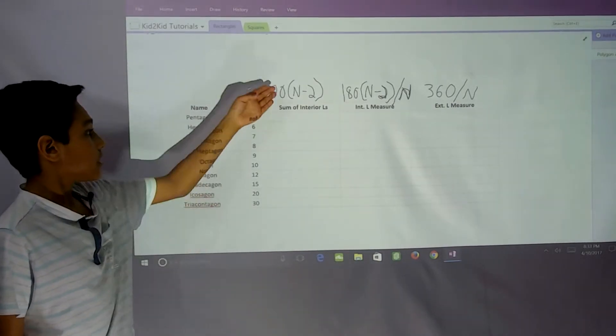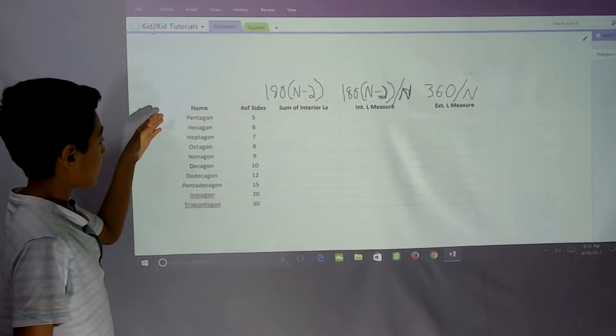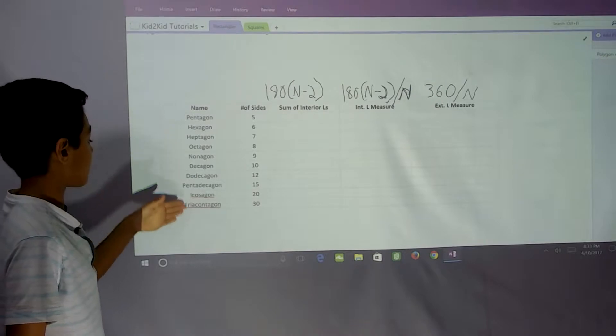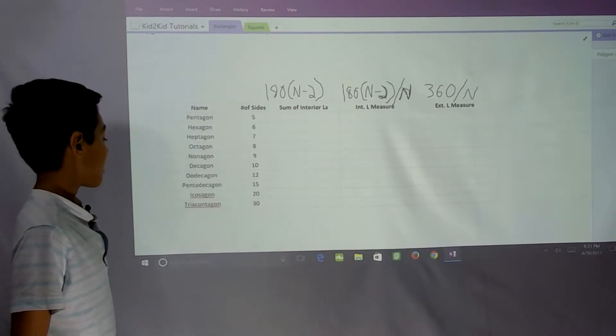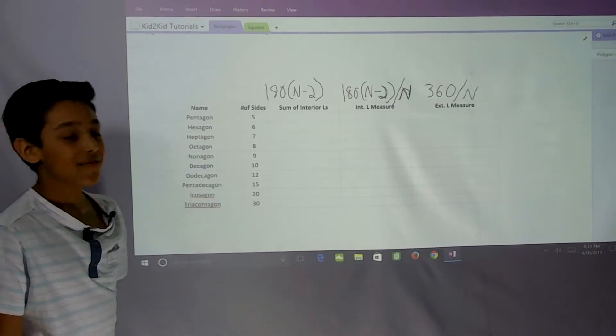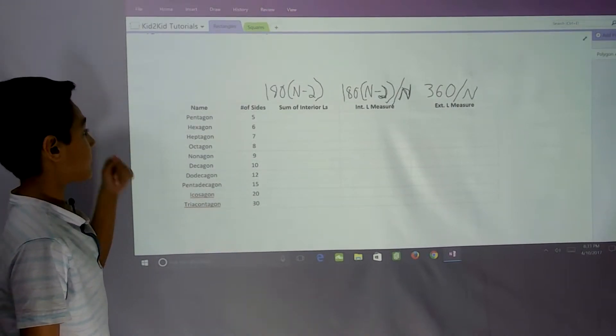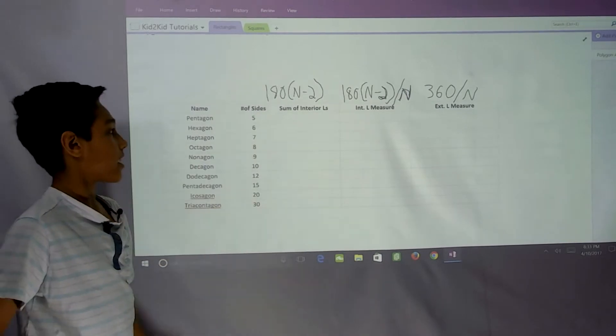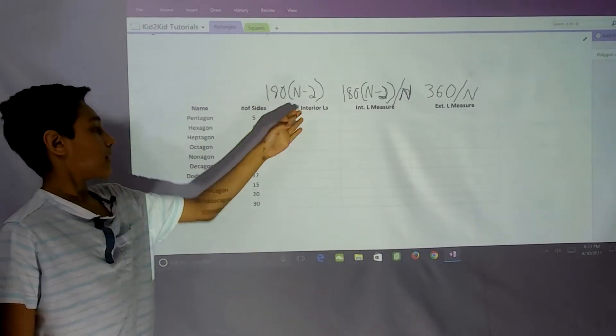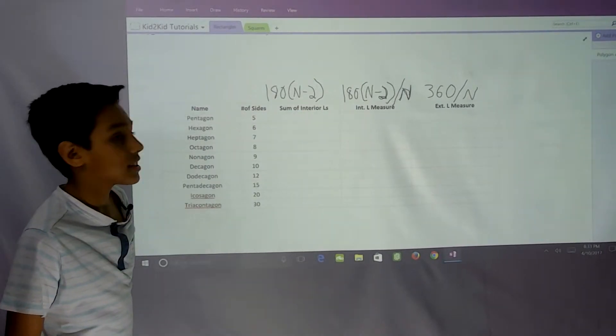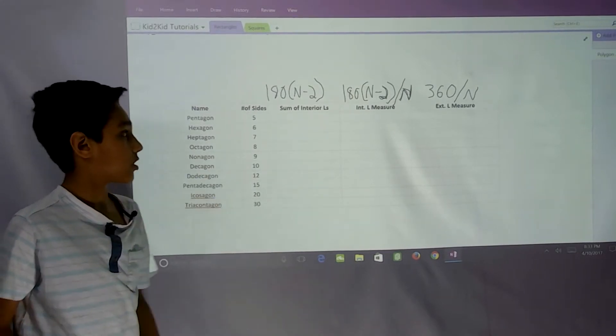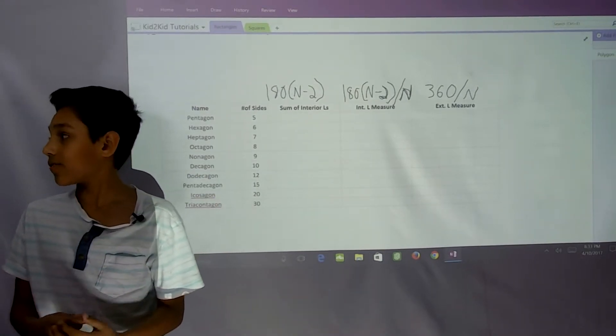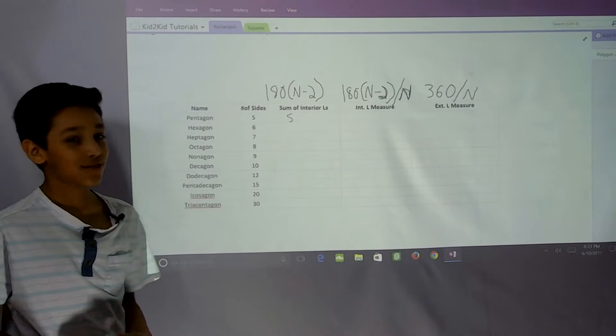Now we use these formulas to find the pentagon, hexagon, and so on until tricontagon. For a pentagon, if you plug in 5 for n, we get n minus 2, which is 3, then 3 times 180 equals 540 degrees.